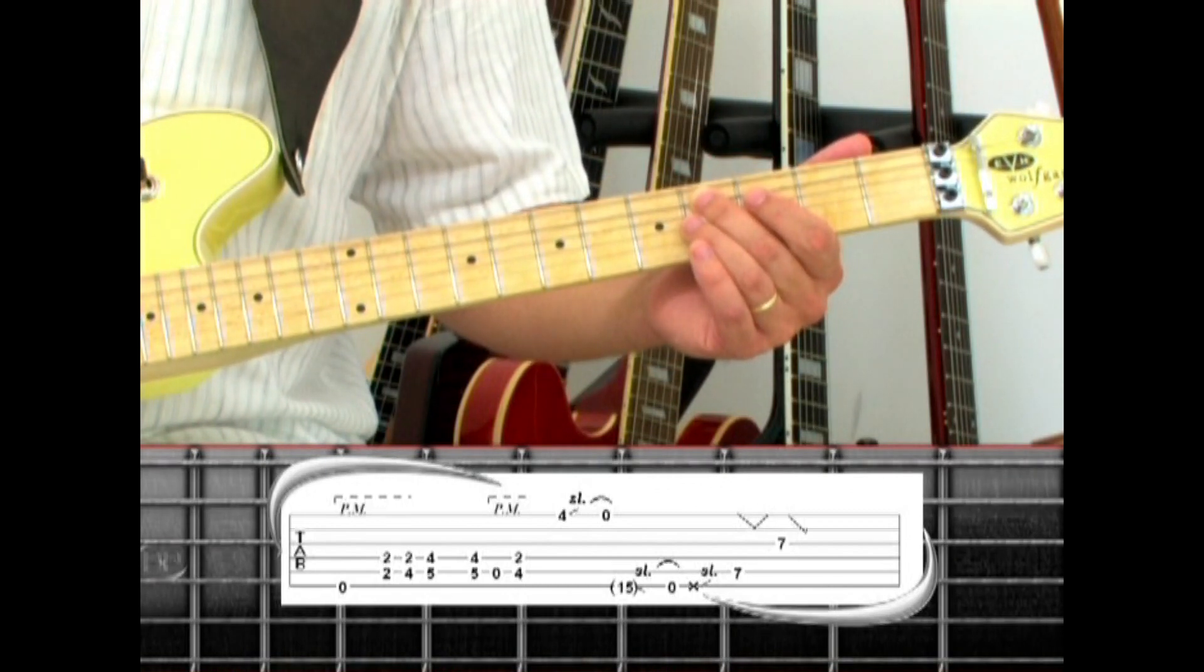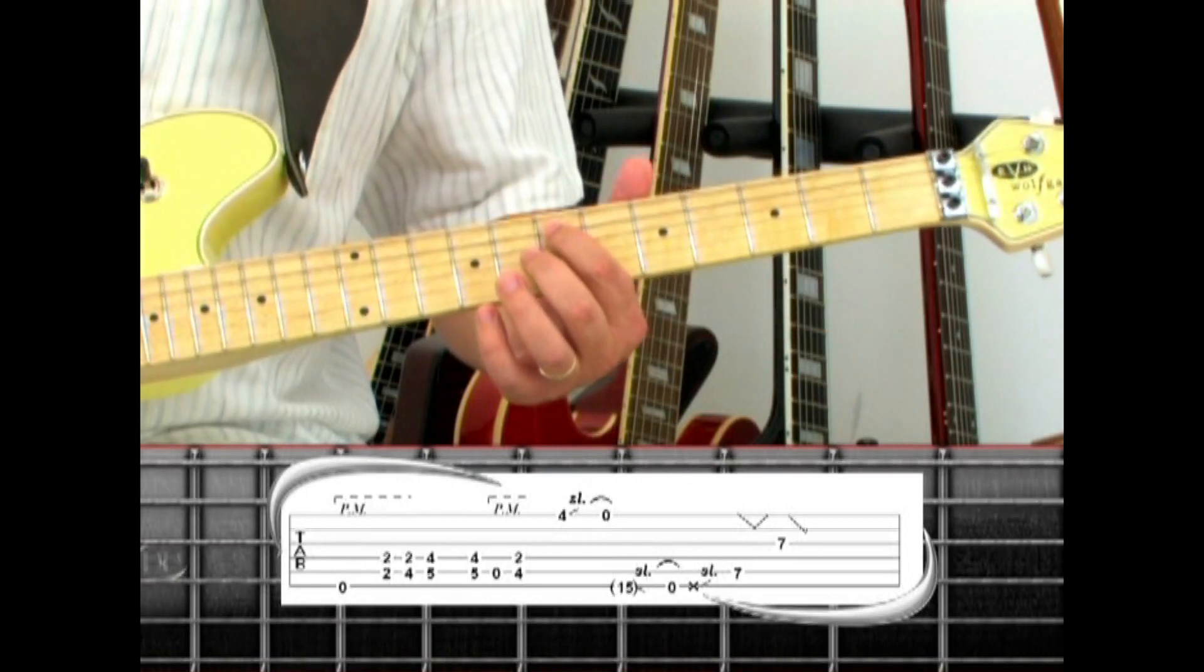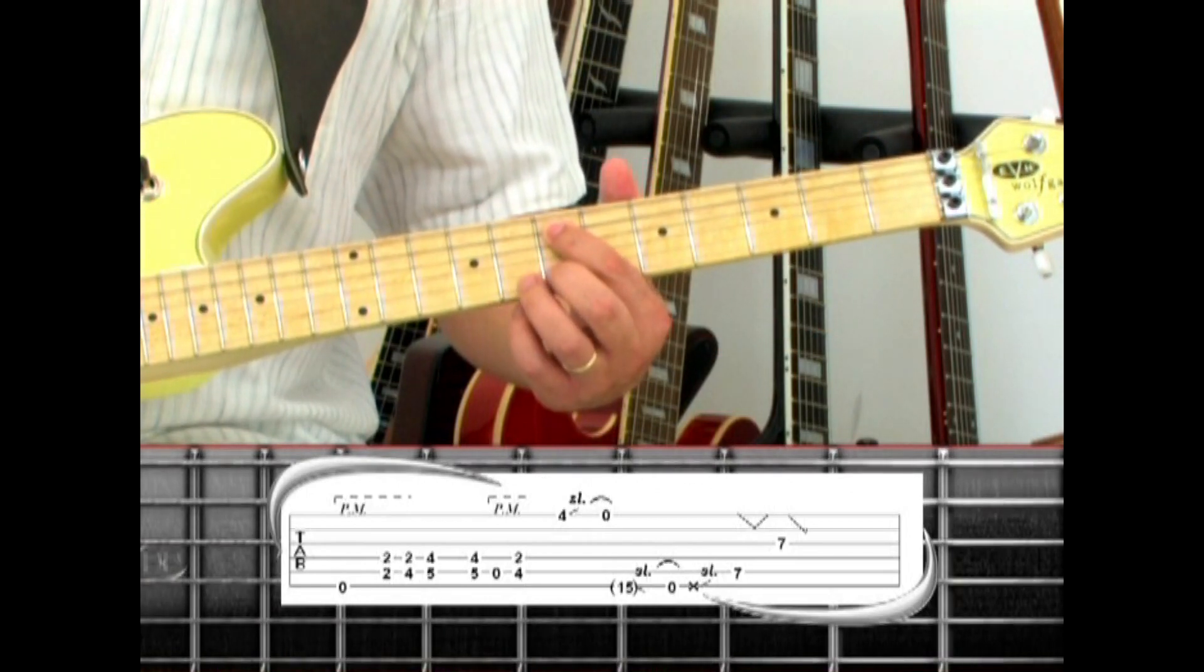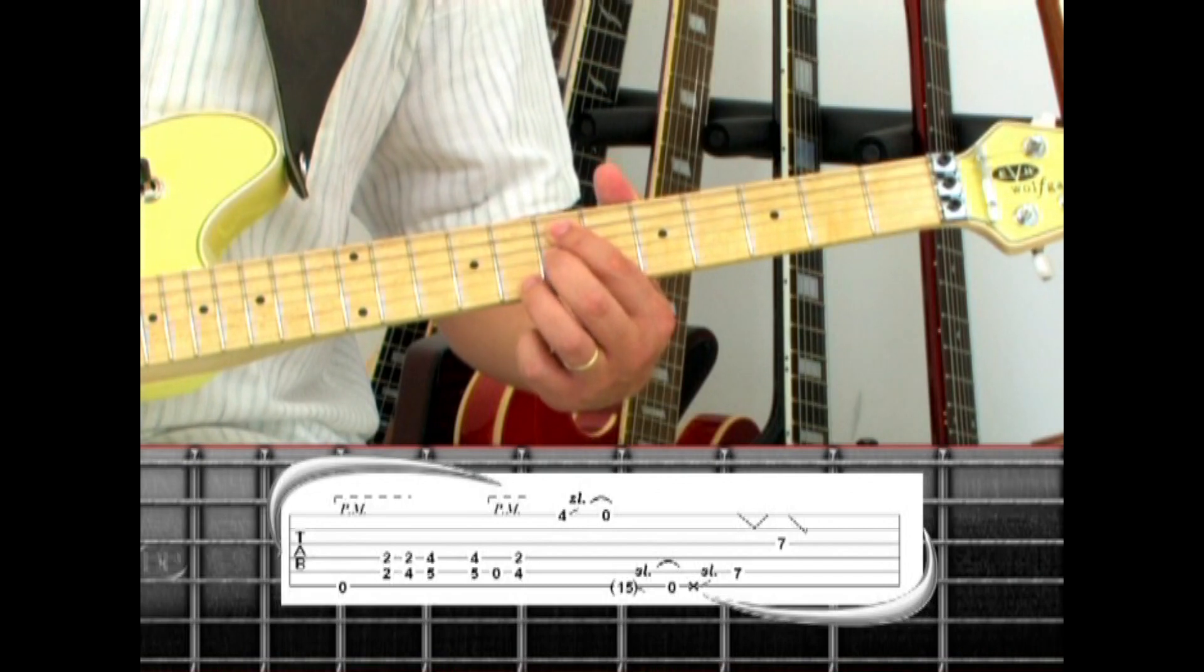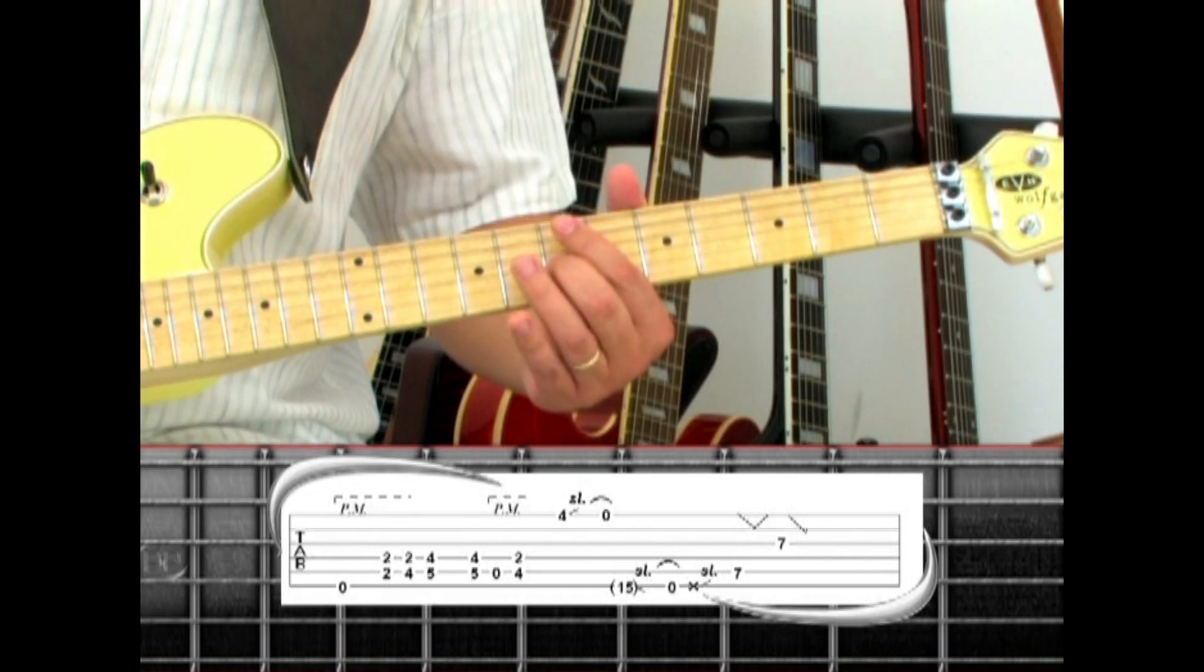Then slide up and play the 5th string, 7, with the tremolo dip and release. Then switch to the 3rd string, 7, with the dip and mute.